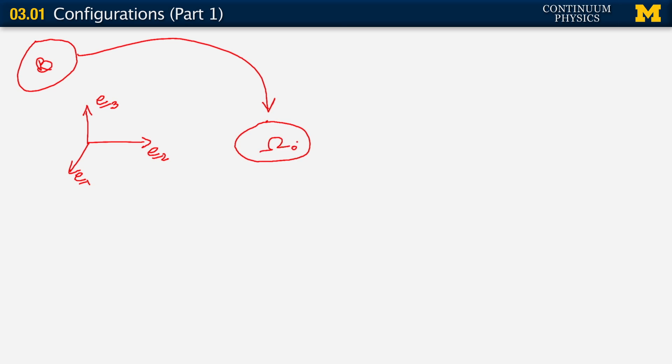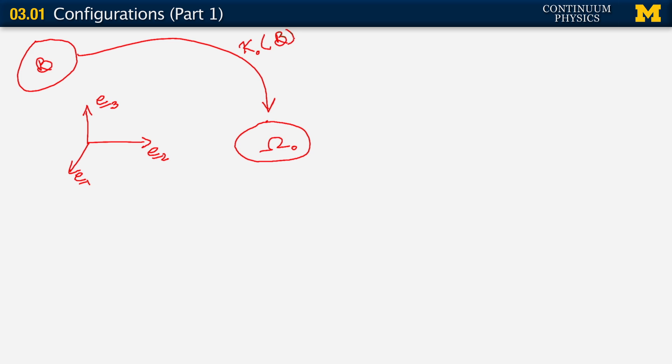Because that's the very first instance that I've brought up of embedding this body in some region in space, I'm going to denote it as omega naught or omega zero. Now we can think of this embedding. I'm going to write a symbol for it. I'm going to call it kappa naught of B. This is simply an abstract and fairly formal way of saying that I'm taking a material body, putting it in some region in space. Once I put it in some region in space, we will only talk of this region in space. We can forget about the body.